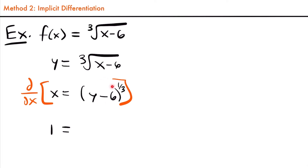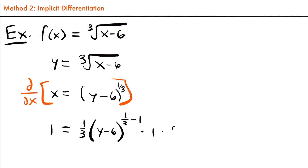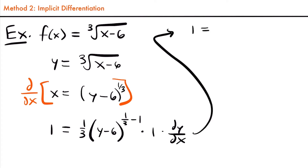Taking the derivative using the chain rule: first take the derivative of the outside function, then the inside function. We get one-third times y minus six to the power of one-third minus one, then multiply by the derivative of the inside function, which is one (the derivative of negative six is zero since it's a constant). Don't forget we need to multiply by dy/dx. Simplifying: one equals one-third times y minus six to the negative two-thirds power times dy/dx.